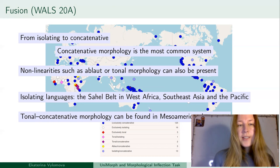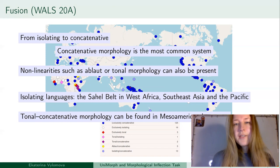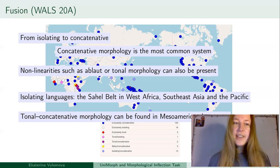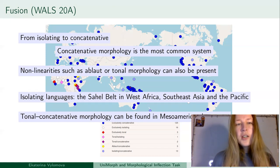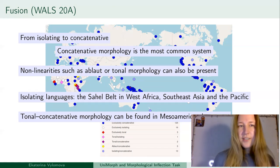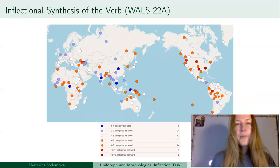In terms of isolating languages, we see them in the Sahel belt in West Africa, Southeast Asia, and the Pacific. Whereas in Mesoamerican languages, we might observe some tonal concatenative morphology.